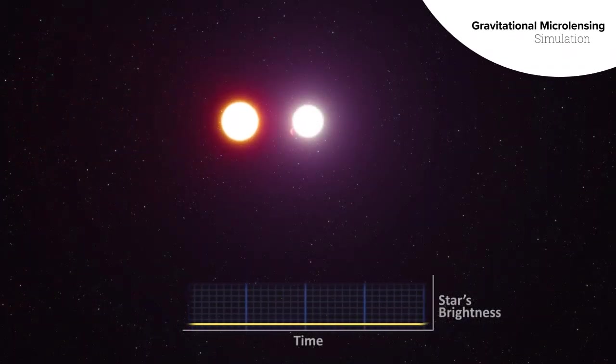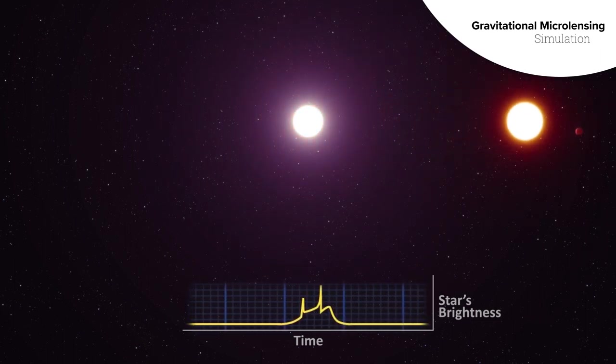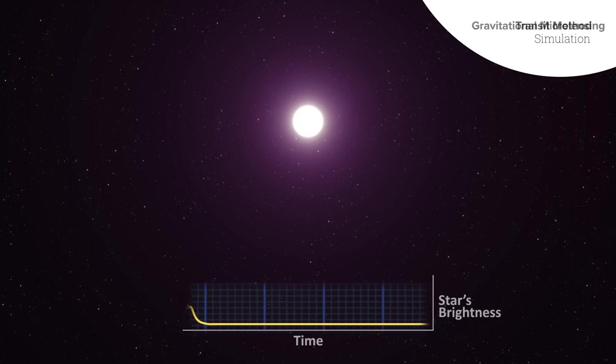Some planets are found by a technique that uses Einstein's theory of general relativity, observing the bending effect of gravity from a hidden planet as it warps the light around its host star.